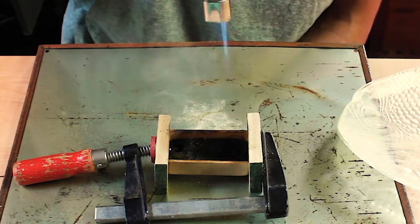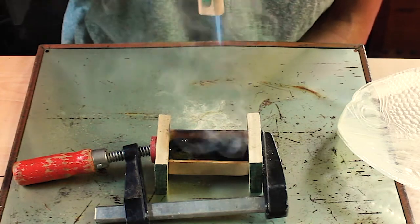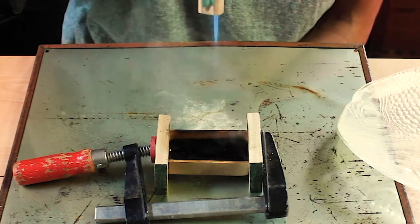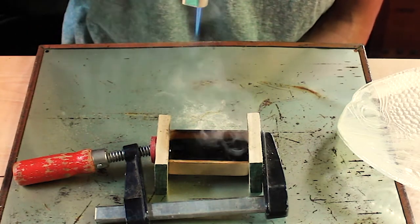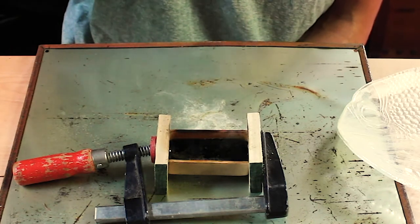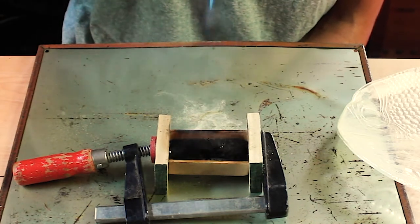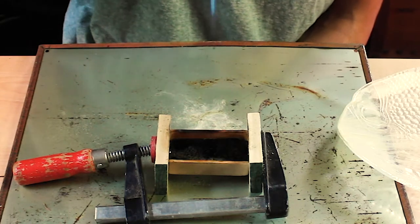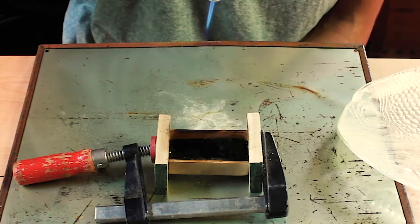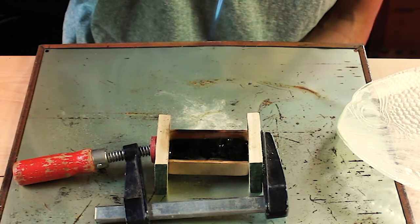All right, see how that's melting in there real nice? Nice and even. Now, as you can see, oh, we got a little bit too hot there. As you can see, the reason why we have the pieces of wood on there is because if we didn't, it would just run out the side when it liquefied.